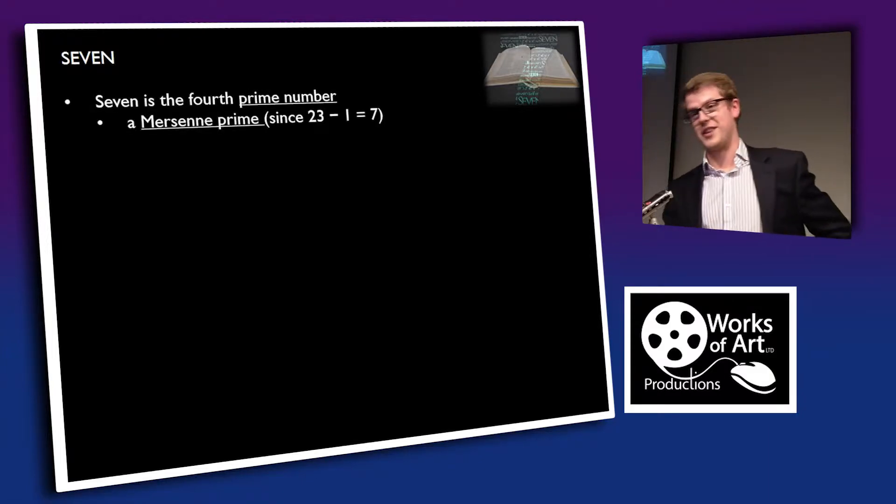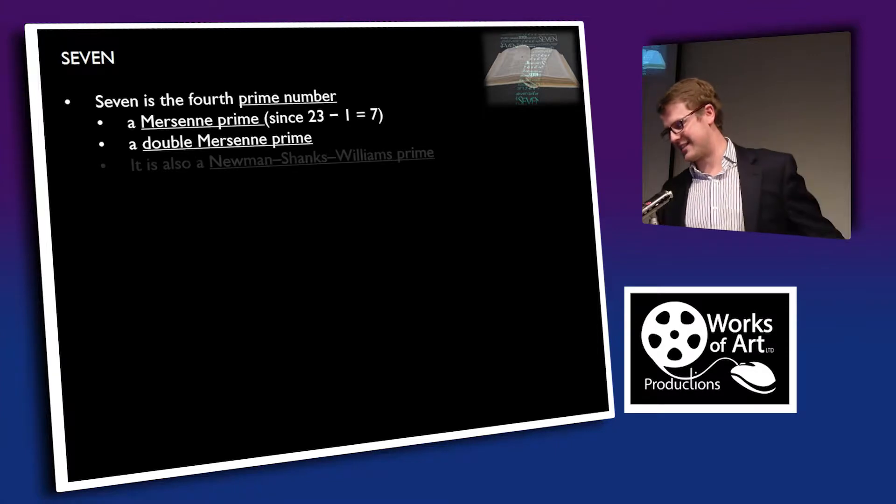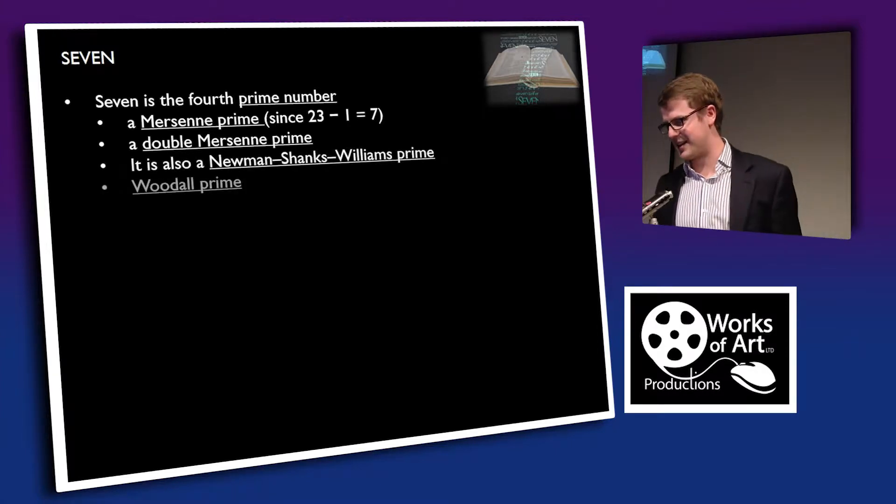Seven is also the only dimension, beside the familiar three, in which a vector cross product can be defined. I didn't know there were seven dimensions — I knew about four or five including space and time — but seven, well, the mind boggles. Don't ask me to explain it.